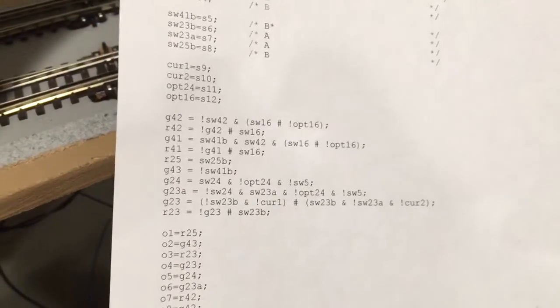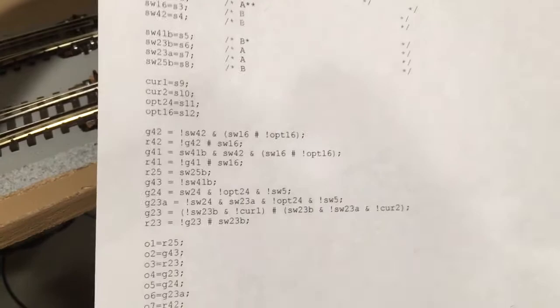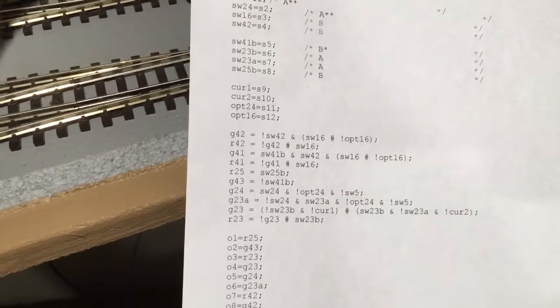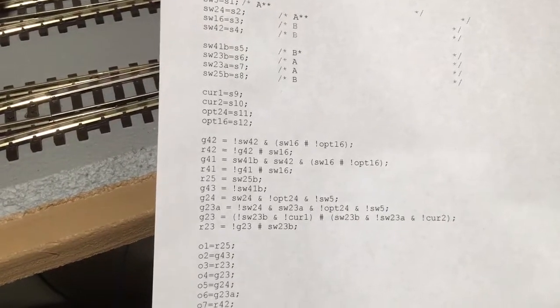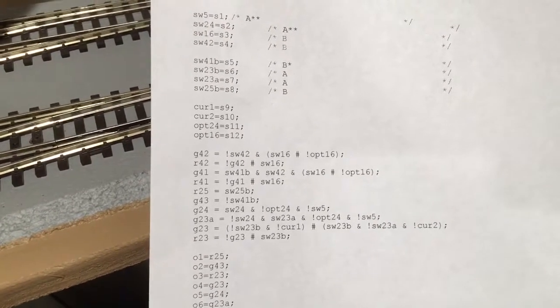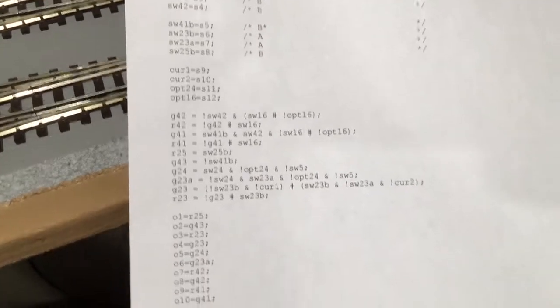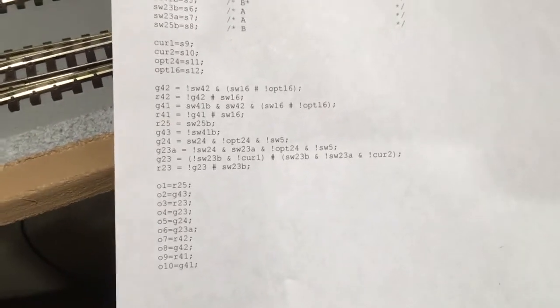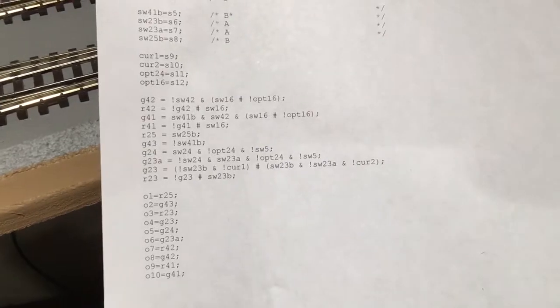And here is an example. I don't know if you can see it well. With the file that you need to write down in order to program the boolean function. It's pretty much straightforward. So in this section you can see that green next to switch 42 is when switch 42 is not thrown, and the switch 16 is thrown, or optical detector on a switch 16 is off. And here are all the boolean expression for different lights. And then pretty much I assign them to outputs. Output 1, 2, 3, 2, 10. Then you compile this program into the chip and you get the function you want.